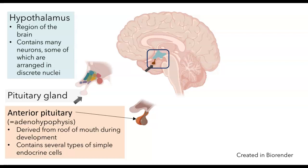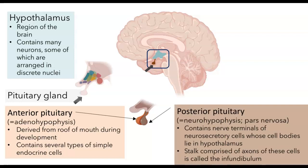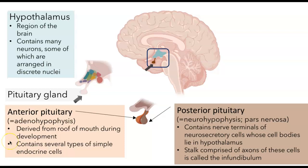The anterior pituitary is also called the adenohypophysis. It is derived from the roof of the mouth during development, and it's not neural. It contains several types of different endocrine cells. The other part of the pituitary, the posterior pituitary, is nervous tissue. It's called the neurohypophysis, also called the pars nervosa, and literally these mean the part of the hypothalamus that's nervous tissue. This part contains the nerve terminals of neurosecretory cells whose cell bodies lie in the hypothalamus.